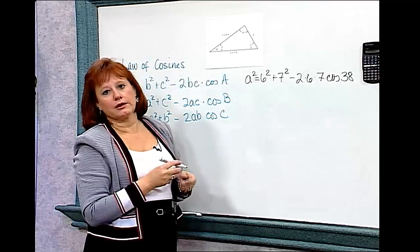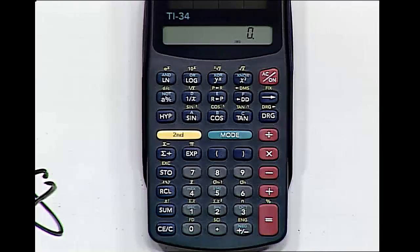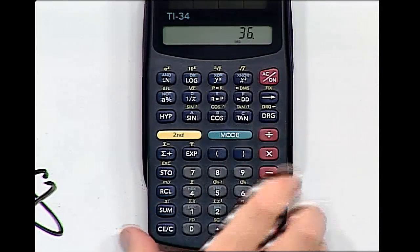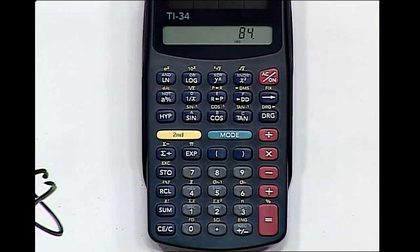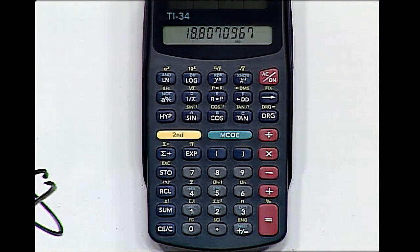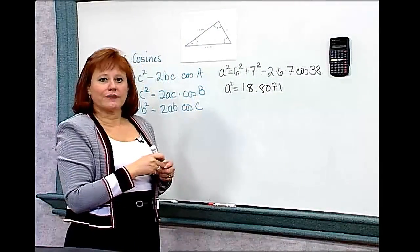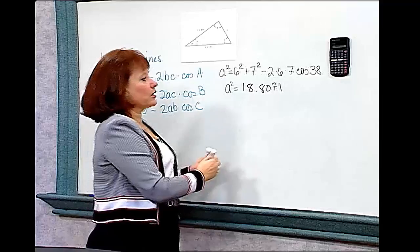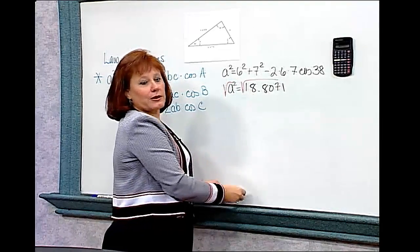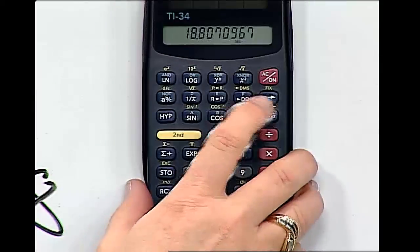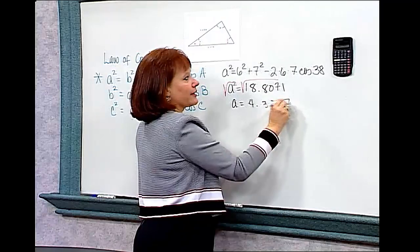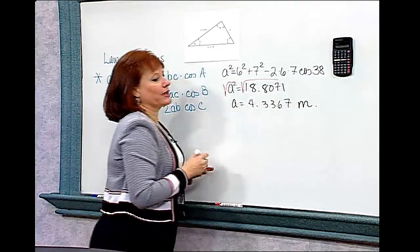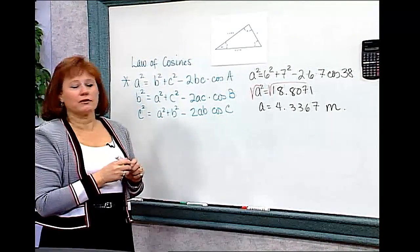When we solve this, it's just a matter of punching buttons on the calculator. We'll take 6 squared plus 7 squared, minus 2 times 6 times 7, times the cosine of 38, and when we hit equals, we find it's equal to 18.8071. Now, we have solved for A squared, not A. To complete the equation, we take the square root of both sides. I hit the square root key and find that A is equal to 4.3367 meters.